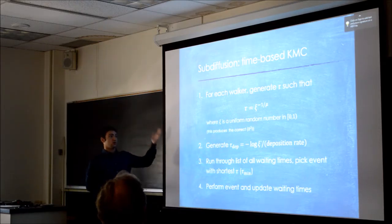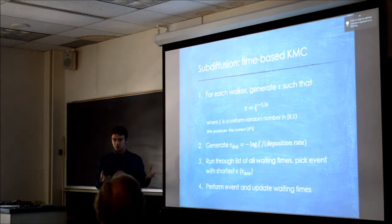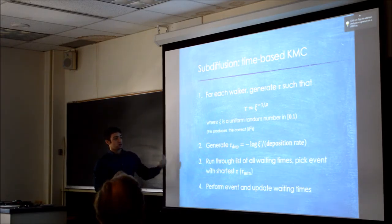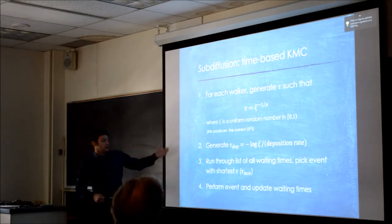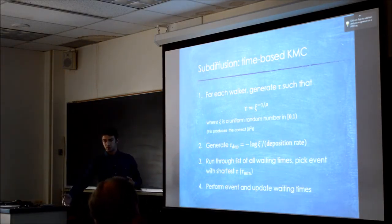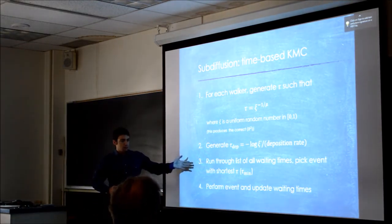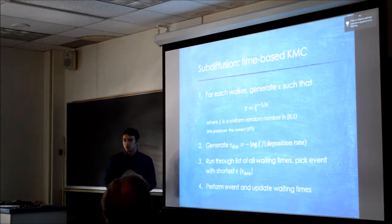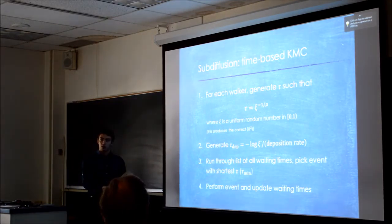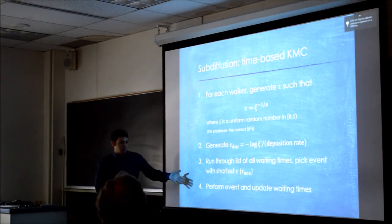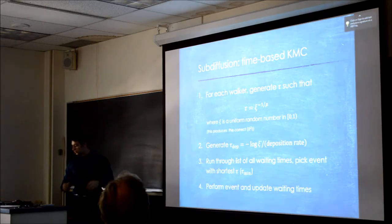So what we do is, for each walker, we generate this tau. This tau comes from a power law distribution of waiting times, which comes from an exponential distribution of hopping potentials on a surface, and it does reproduce the correct mean squared displacement value for sub-diffusion. Then we generate a tau deposition, the time before the next deposition. We have the waiting times of all these walkers, and the time before the next deposition is this other random number. Then basically what we do is we run through the list of all these taus, and we find the minimum one. The minimum tau means the minimum waiting time before the next event. Whatever that event is, that's what we do. If it's a diffusion, we diffuse that walker that had the lowest waiting time. If it's a deposition, then we deposit. Then we update all the times. Now we've waited this time, we update everybody's tau, and we do this process again. We keep doing this until we get to a range of coverage that we want.